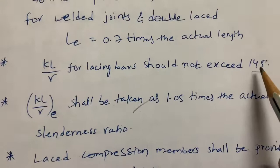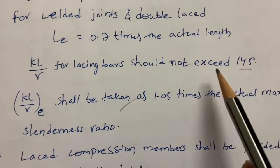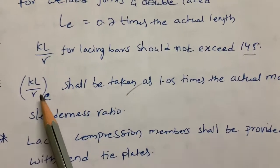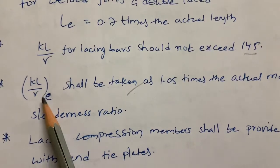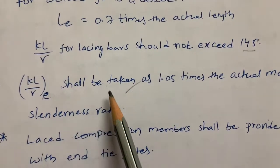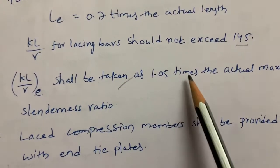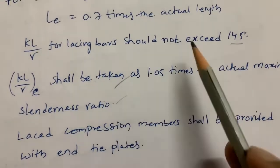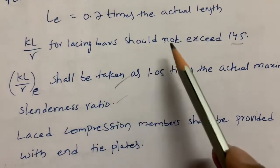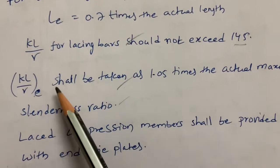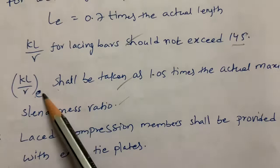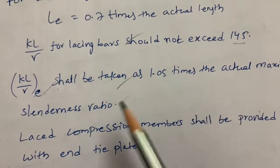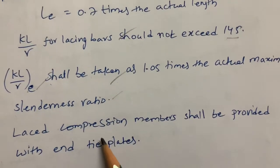The slenderness ratio for lacing bars should not exceed 145, as specified by the code. Additionally, the effective slenderness ratio shall be taken as 1.05 times the actual maximum slenderness ratio of the column.